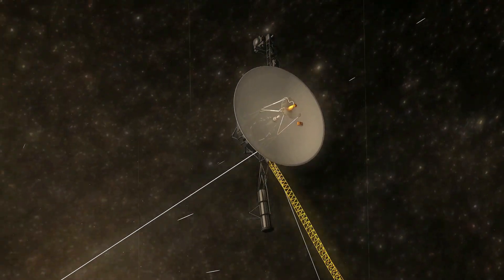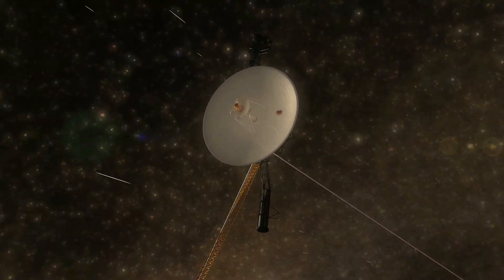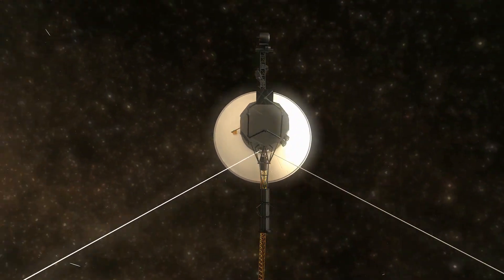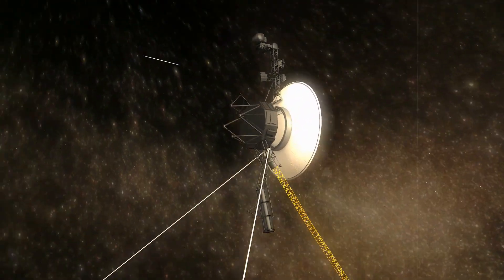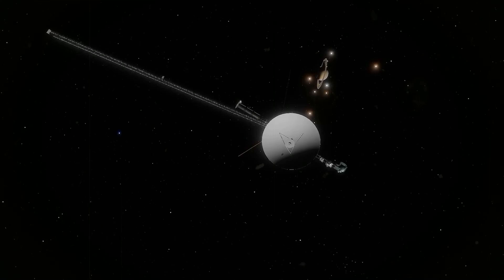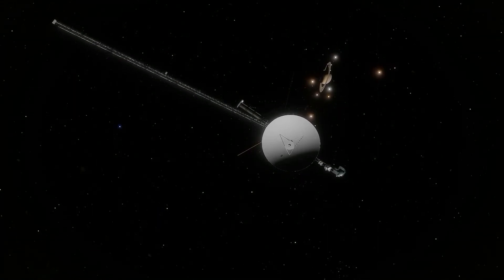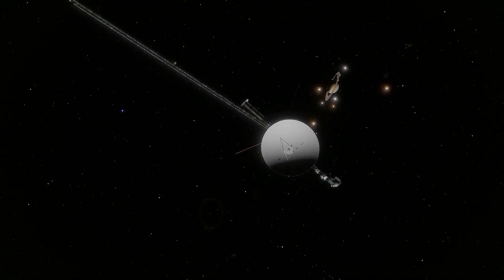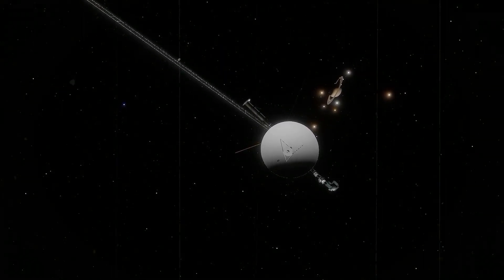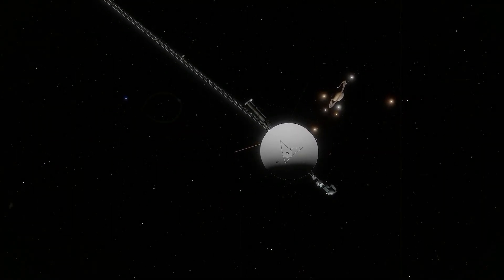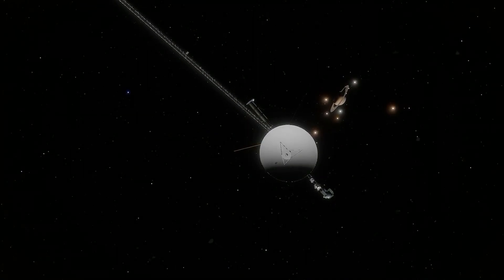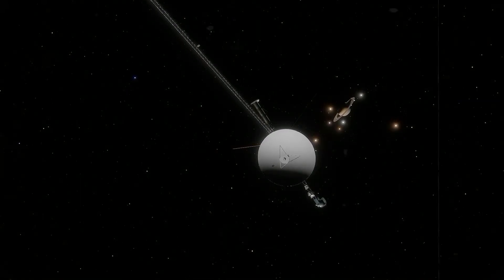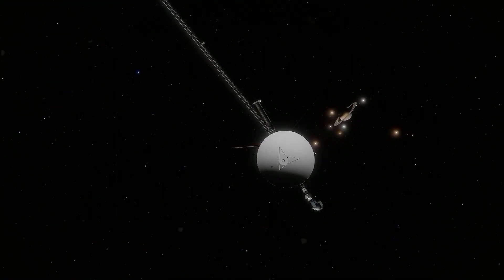For now, Voyager drifts onward, its instruments fading, its signal weakening, but its legacy growing heavier with every new enigma it leaves behind. The million light-year-wide structure is not yet fully mapped, not yet understood, but its shadow has already unsettled cosmology. To admit its existence is to confess that there are forces at work, beyond our models, events on scales that dwarf everything we know, echoes of cosmic acts that may have occurred billions of years ago, yet still sing faintly across the void.